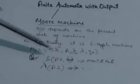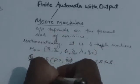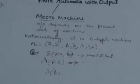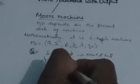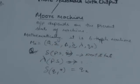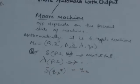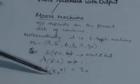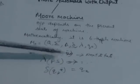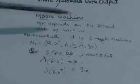Suppose the machine is in a particular state q1 and it reads an input symbol 'a' and jumps to state q2. Then mathematically it is represented as δ(q1, a). It takes two arguments — first is the present state and the input symbol it reads — and its output would be the next state q2.